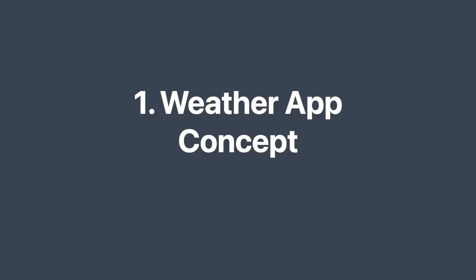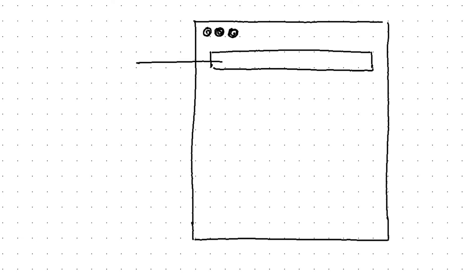Hi everyone! Welcome to this tutorial on how to create a weather app using Python and the OpenWeatherMap API. In this video, we will be creating a GUI-based weather app that retrieves the current weather data for a specified city and displays it to the user.